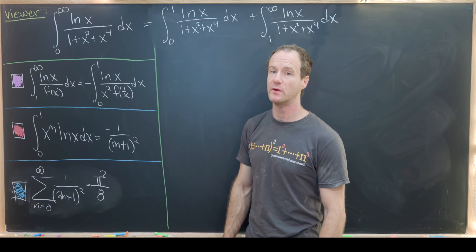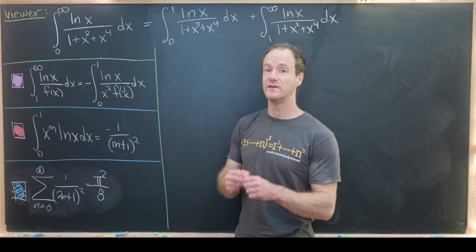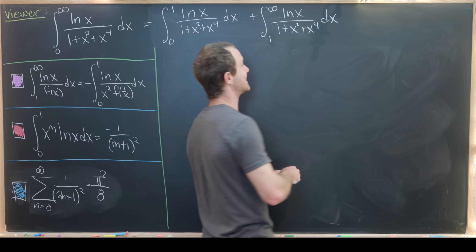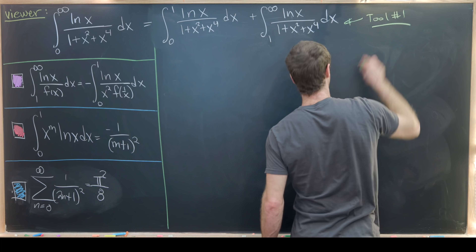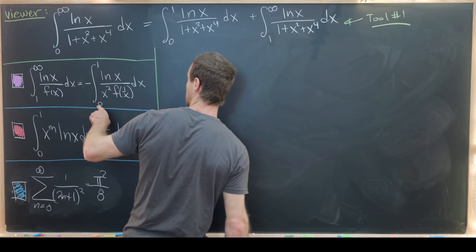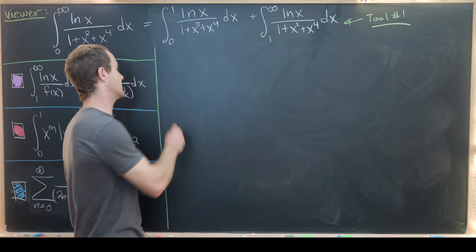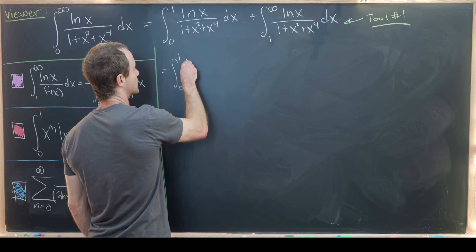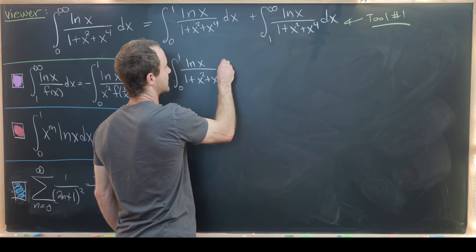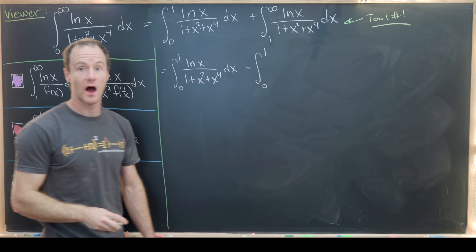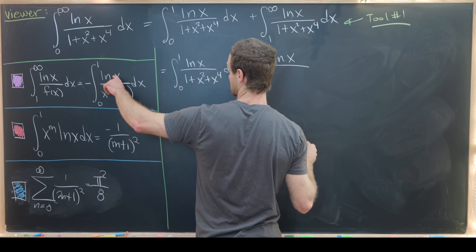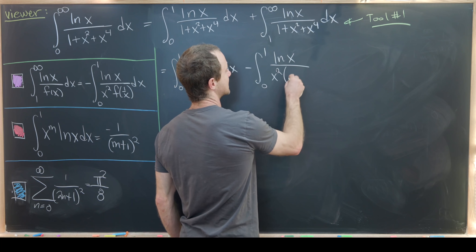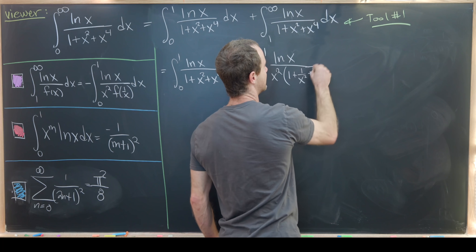We just finished our last tool and now we're ready to evaluate the integral. The first step is separating the integral from 0 to infinity into integrals from 0 to 1 and 1 to infinity. We apply the first tool to the second integral, converting the interval from 1 to infinity back to 0 to 1. This gives us the integral from 0 to 1 of ln(x) over (1+x²+x⁴) dx, minus the integral from 0 to 1 of ln(x) over x² times (1 + 1/x² + 1/x⁴) dx.